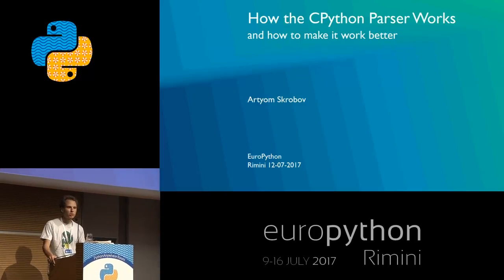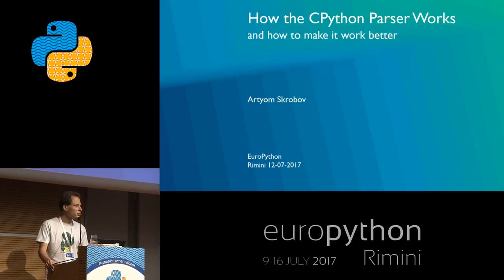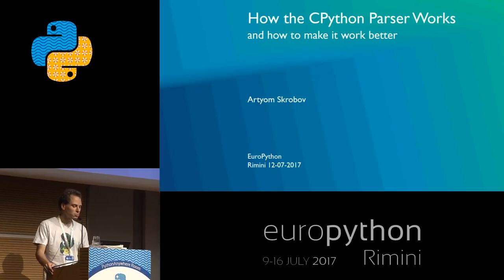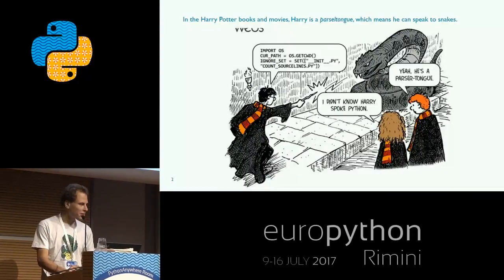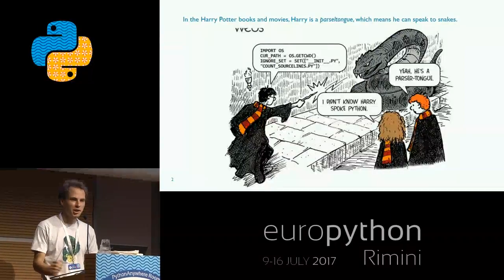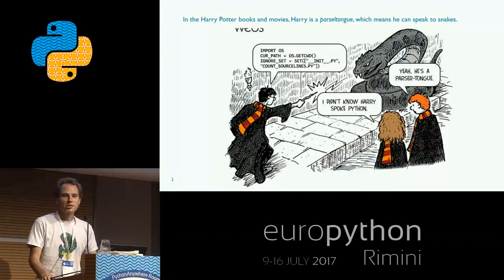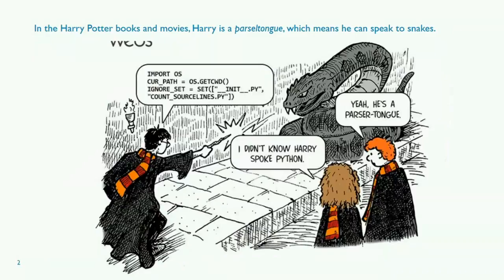So what is the Python parser? The parser is the first stage of the interpreter, which converts the source code into a parse tree, which the compiler then compiles into bytecode, and the bytecode is what the interpreter actually runs.